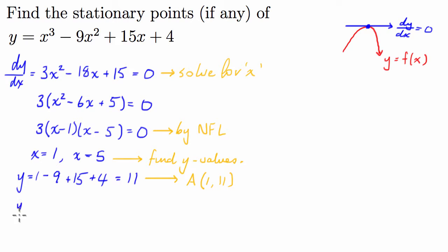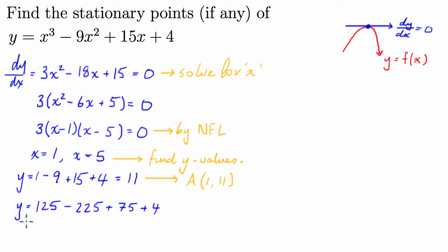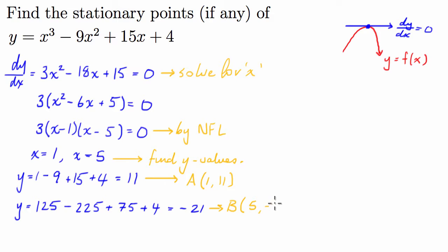Now we substitute x equals 5: y equals 5 cubed minus 9 times 5 squared plus 15 times 5 plus 4. That's 125 minus 225 plus 75 plus 4. So 125 minus 225 is negative 100, plus 75 is negative 25, plus 4 is negative 21. So we have our second point, let's call it B: (5, negative 21).